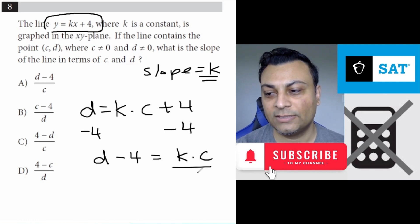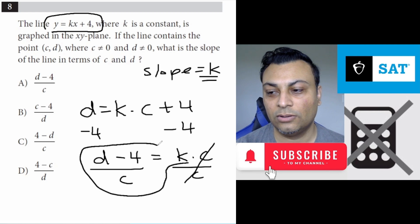When you divide by c, because you're solving for k, you divide by c. And you get k equals d minus 4 all over c.